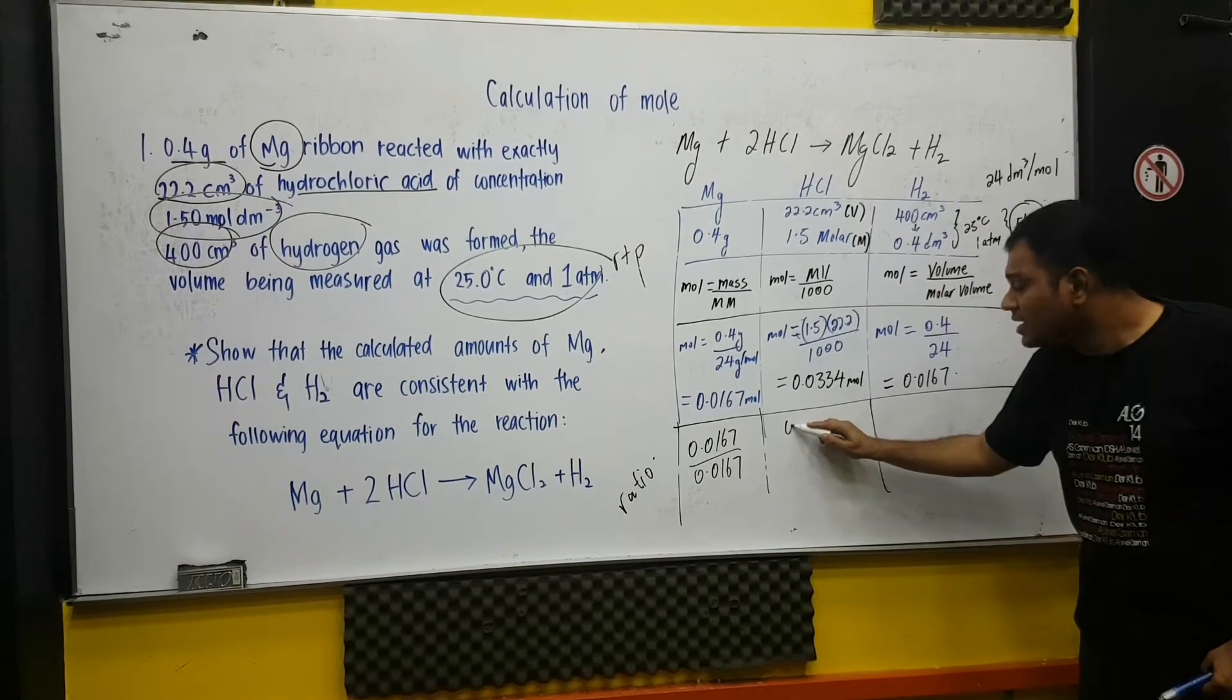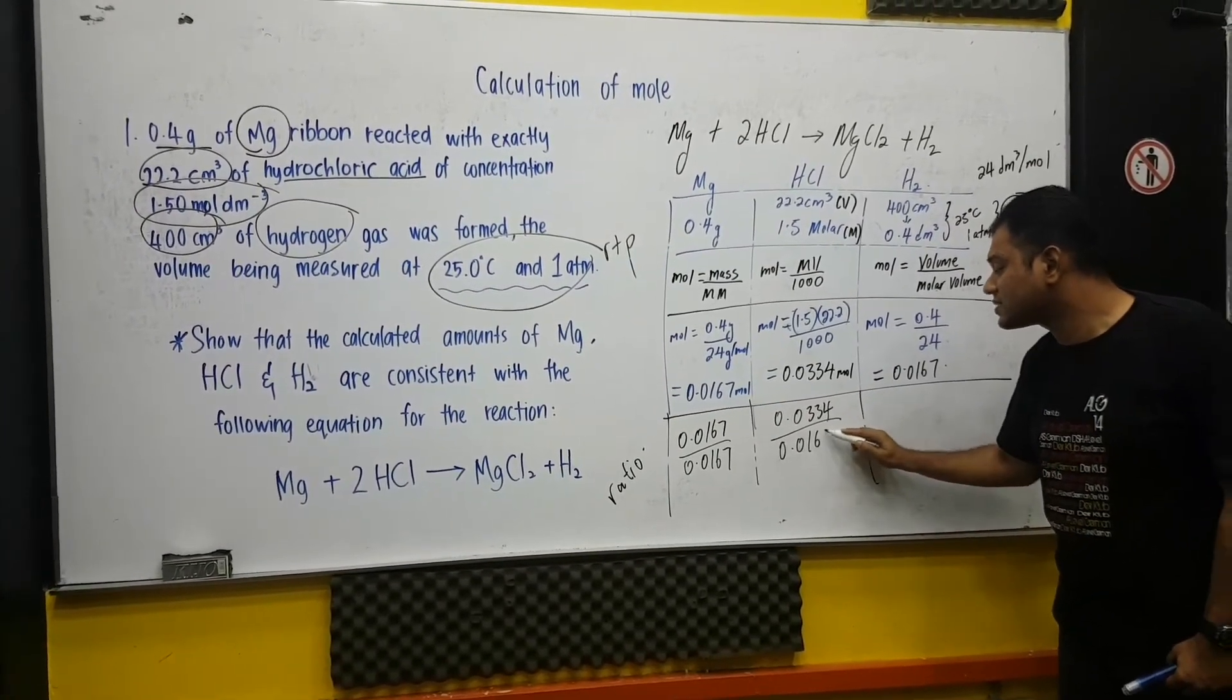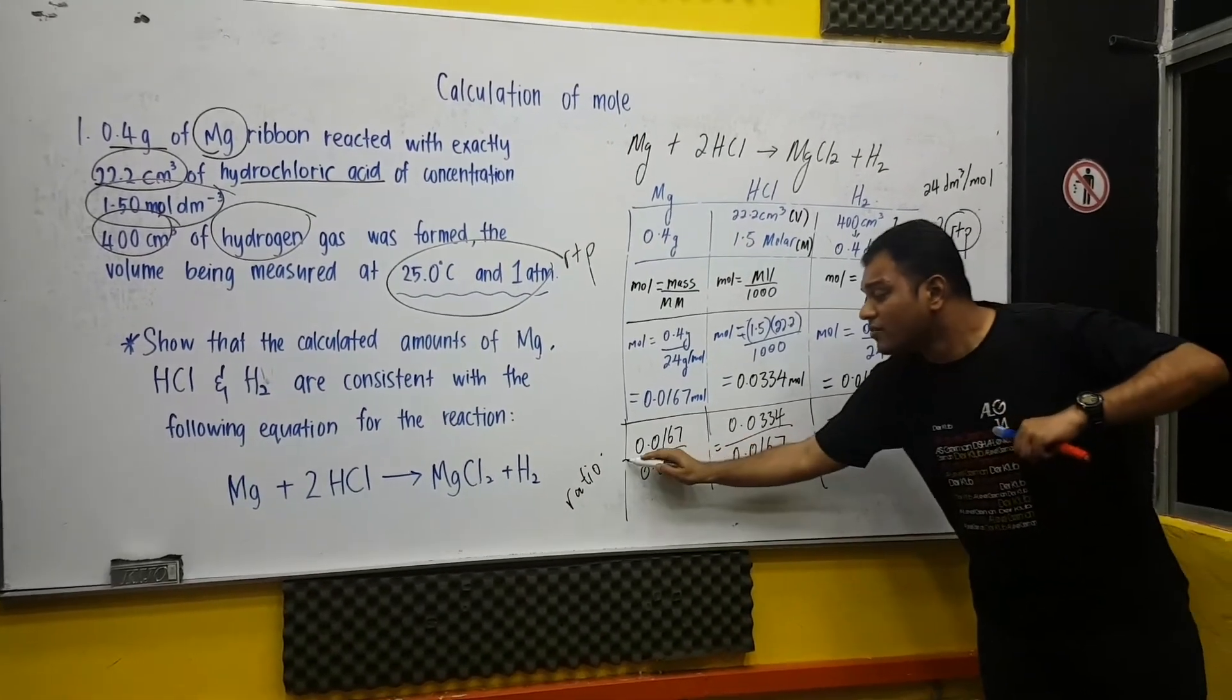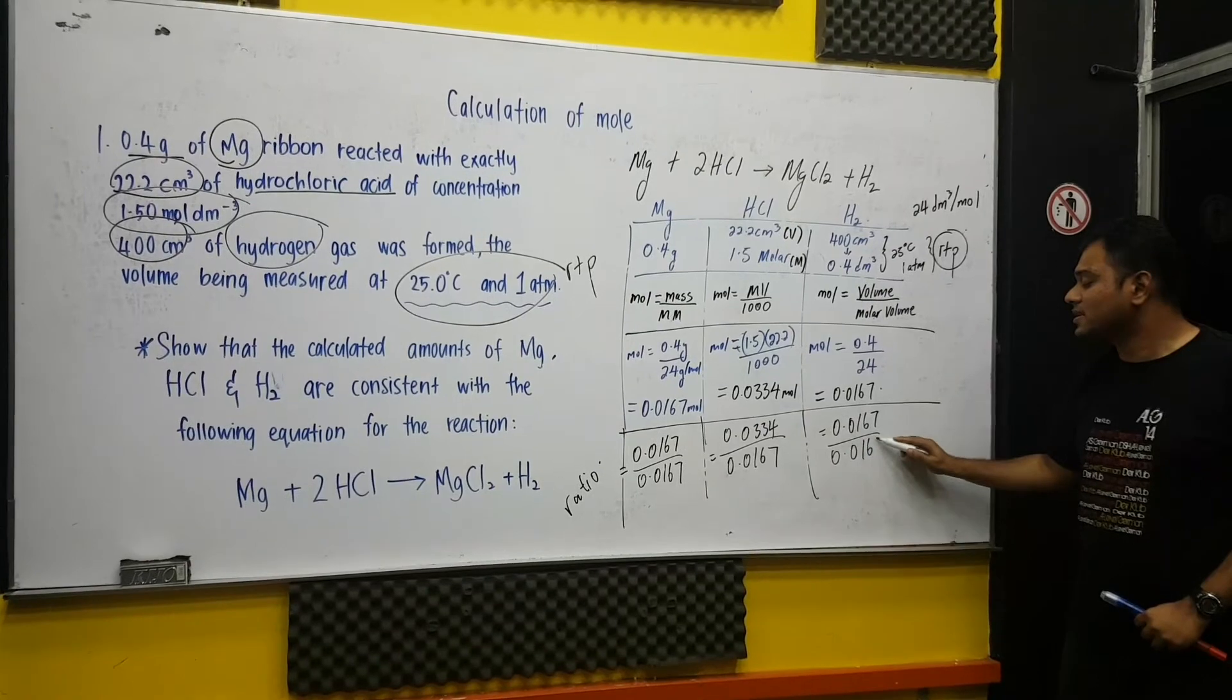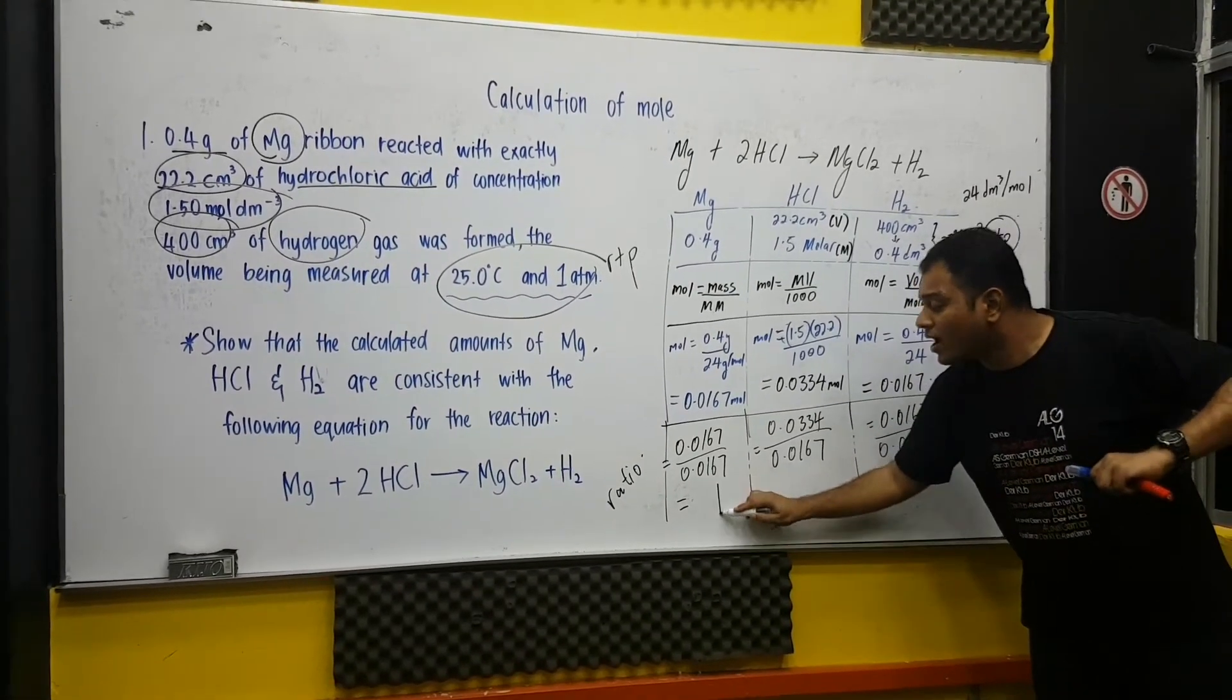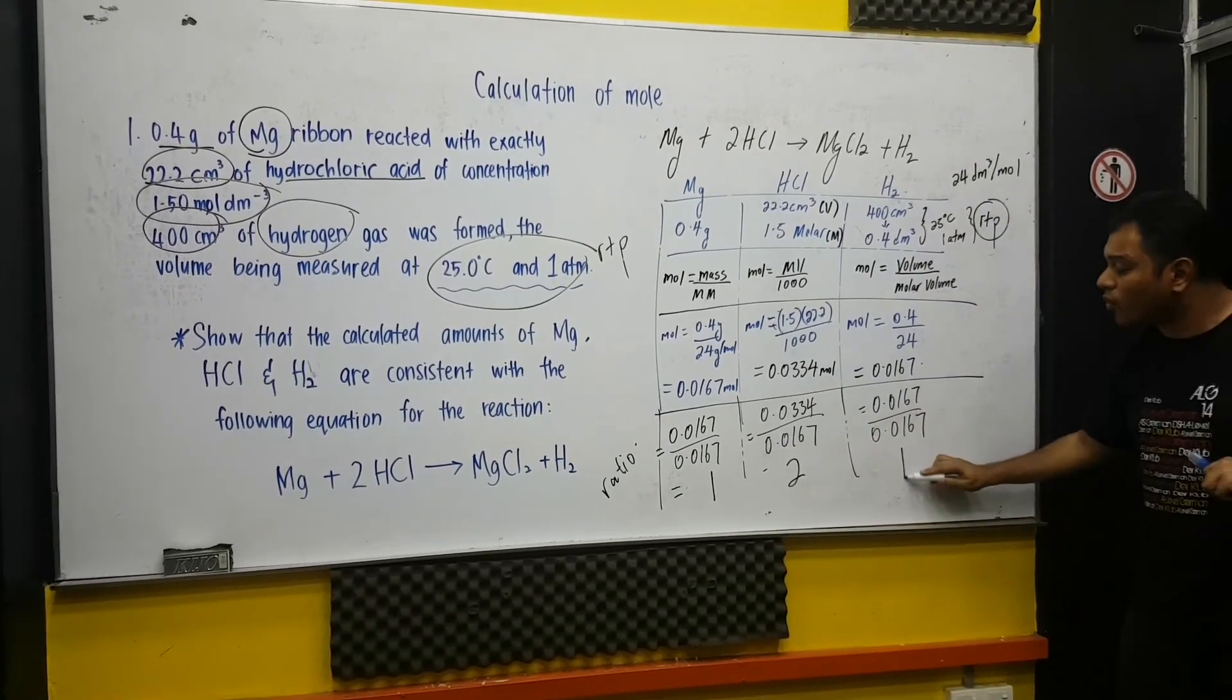On the other hand, 0.0334 divided by 0.0167. Again, we are taking the ratio. You must remember, we are taking the ratio. On this one, 0.0167 divided by 0.0167. Press the calculator, you will get the answer. 1, this one, 2, and this one, 1.